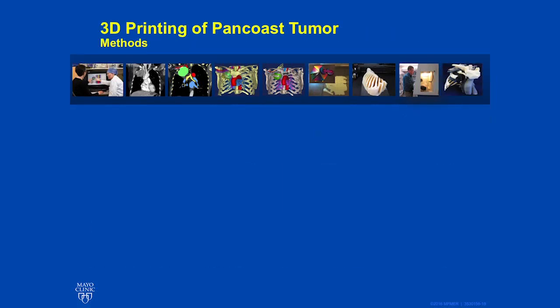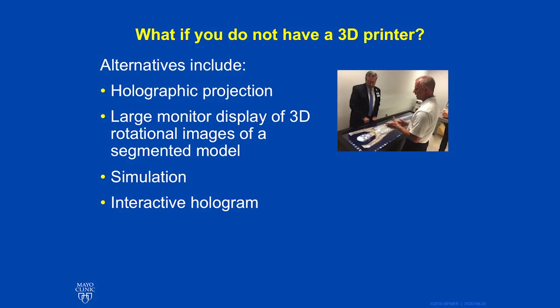We have now shown you all of the processes required to create a 3D printed model. The process of 3D modeling is complex and requires many different specialties working together. Alternatives to 3D printing include holographic projection, large monitor display of 3D rotational images of a segmented model, simulation, or the use of an interactive hologram.